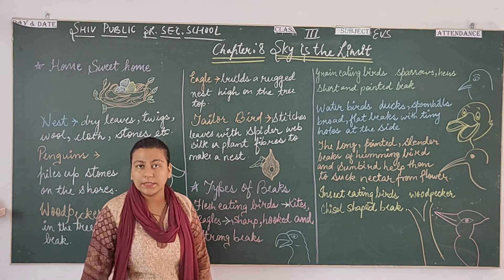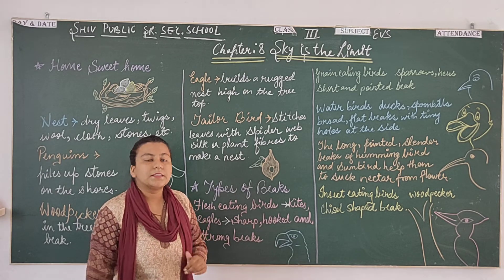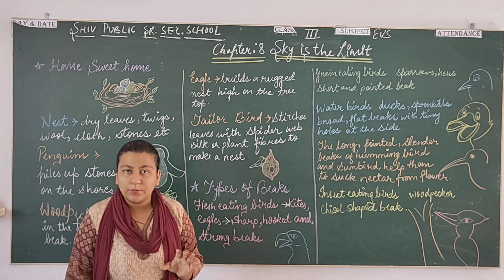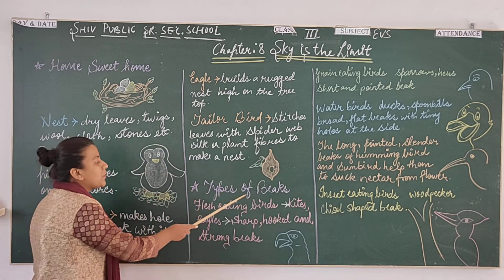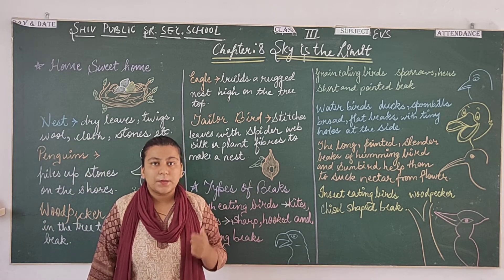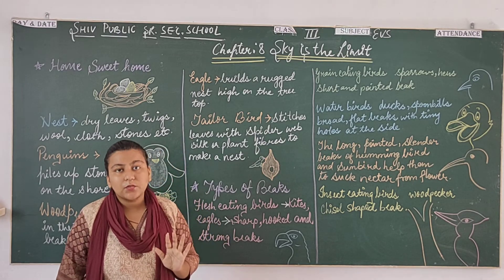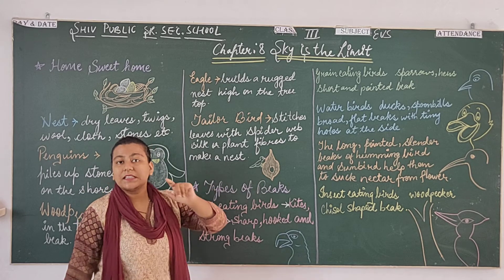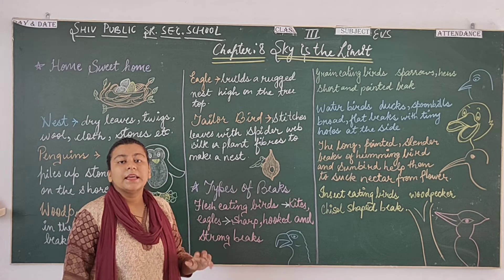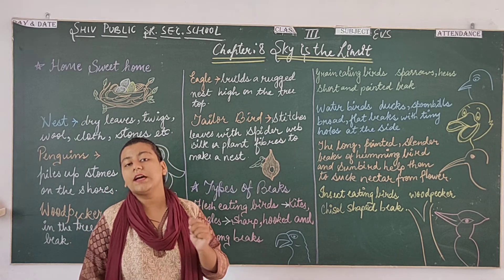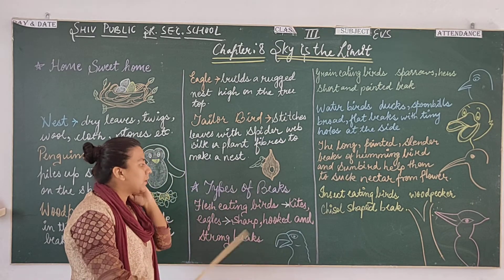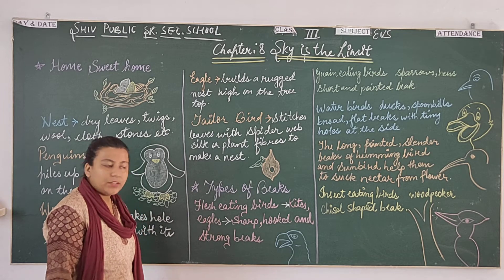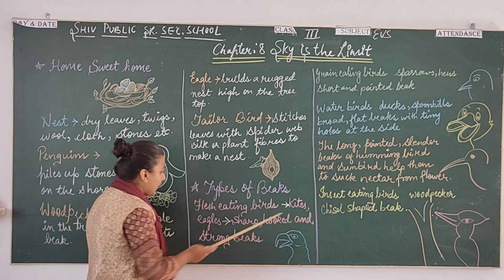The nest is made comfortable and soft. Now the next topic is the types of beaks. Beaks can be sharp, curved, and strong.